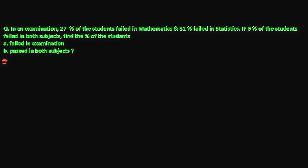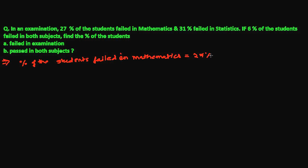What's the information? 27% of the students fail in mathematics. So the percentage of students failed in mathematics — I can write that as a cardinal number: number of students failed in mathematics, N(M), is how much? I'm supposing this is 27.